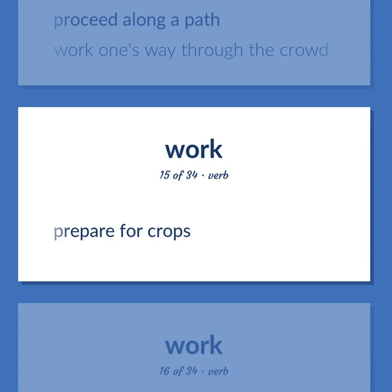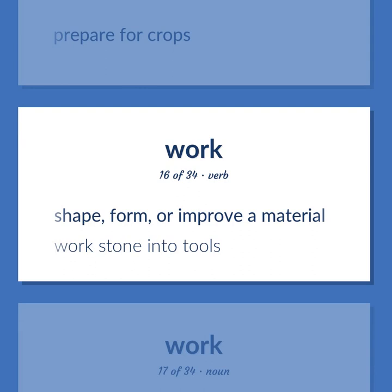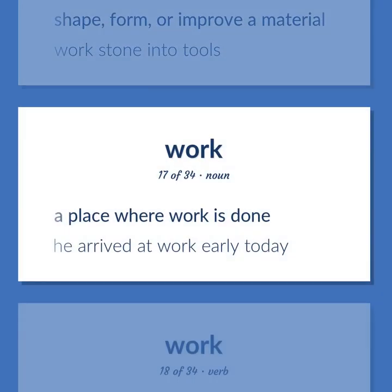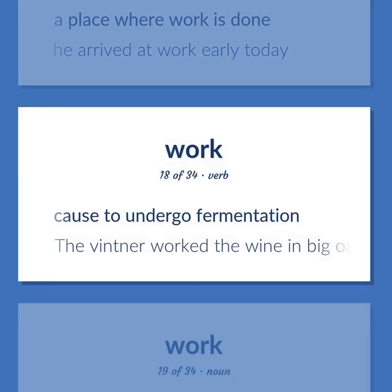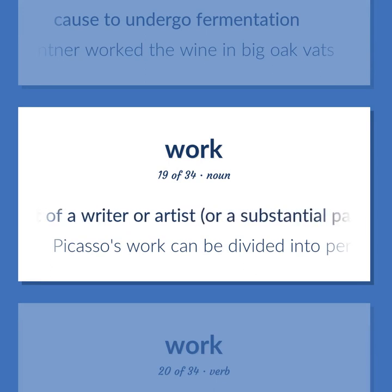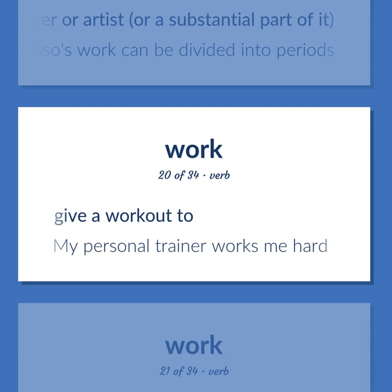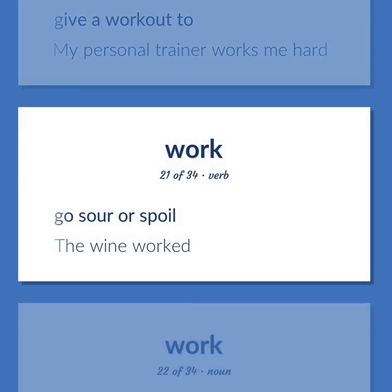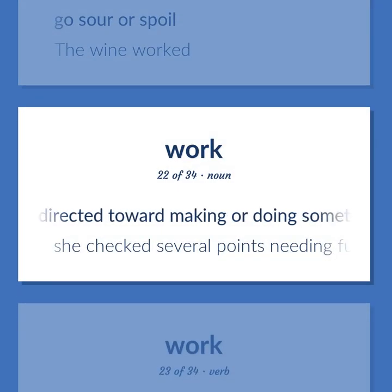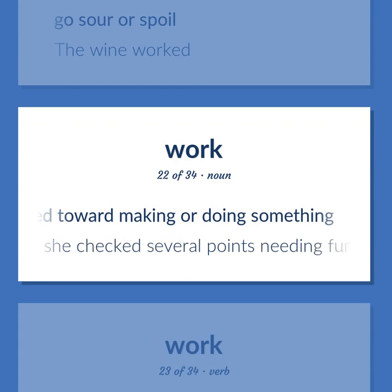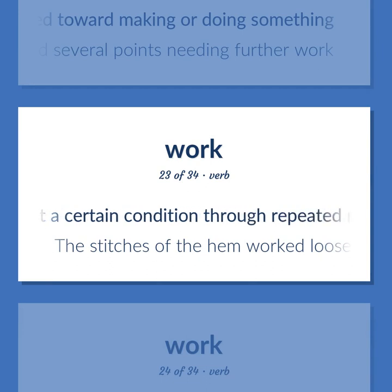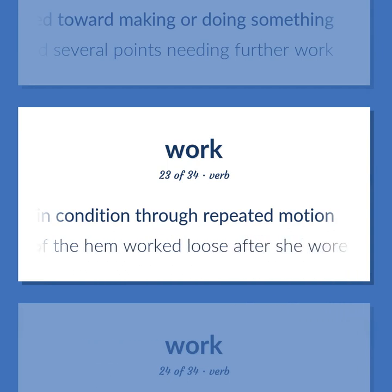Work: prepare for crops; shape, form, or improve a material — work stone into tools; a place where work is done — he arrived at work early today; cause to undergo fermentation — the vintner worked the wine in big oak vats. The total output of a writer or artist, or a substantial part of it — Picasso's work can be divided into periods. Give a workout to — my personal trainer works me hard. Go sour or spoil — the wine worked. Activity directed toward making or doing something — she checked several points needing further work. Arrive at a certain condition through repeated motion — the stitches of the hem worked loose after she wore the skirt many times.